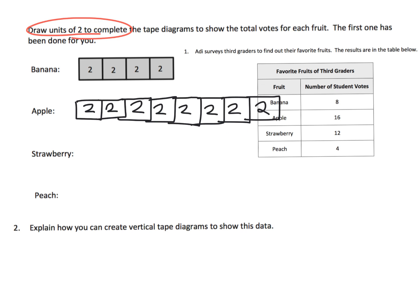There's the apples. And then we see that 12 students liked strawberry. So we're going to represent strawberry. So that's going to be, here's a two, and then four, six, eight, 10, 12 students like strawberries.